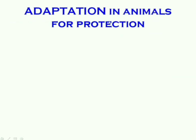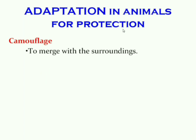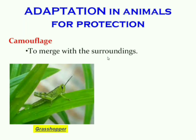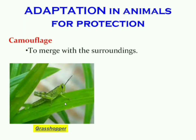Most animals eat other animals, so animals have developed various features for protecting themselves from their enemies. One such feature is camouflage — camouflage is to merge with the surroundings so that it is difficult to spot the animal. For example, a grasshopper sitting on a leaf is not easily visible because its color completely merges with the leaf.